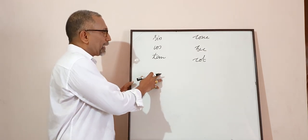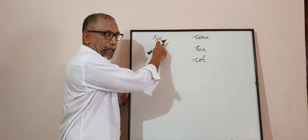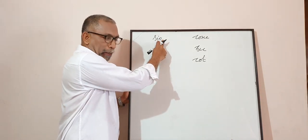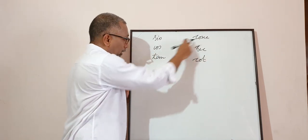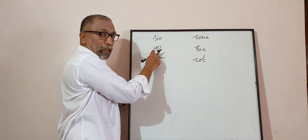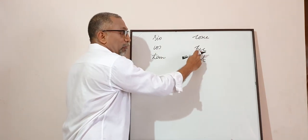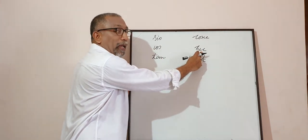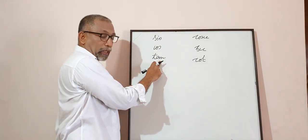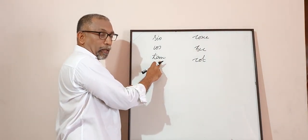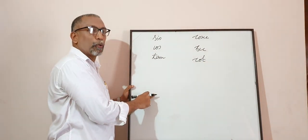We just now discussed that sin is actually the inverse of cosec, because sin is defined as opposite side by hypotenuse, and cosec is defined as hypotenuse by opposite side. Cos is defined as adjacent side by hypotenuse, and sec is defined as hypotenuse by adjacent side. And tan is defined as opposite side by adjacent side, and cot is defined as adjacent side by opposite side.